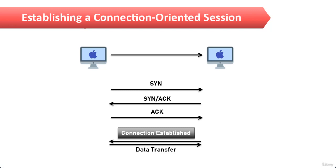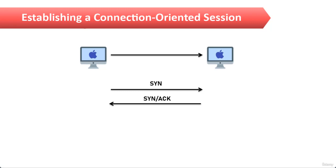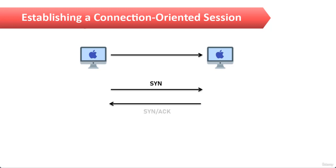The first connection agreement segment is a request for synchronization. The second segment acknowledges the request and establishes connection parameters between the hosts. These segments also request that the receiver's sequencing is synchronized as well, so that a bi-directional connection is formed.